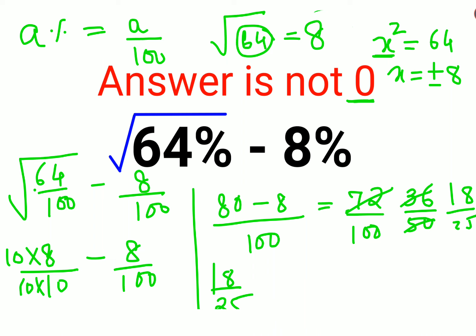If the answer was supposed to be written in decimal form, it would be 0.72. And if it was supposed to be written as a percentage, you just multiply by 100, which gives you 72%.